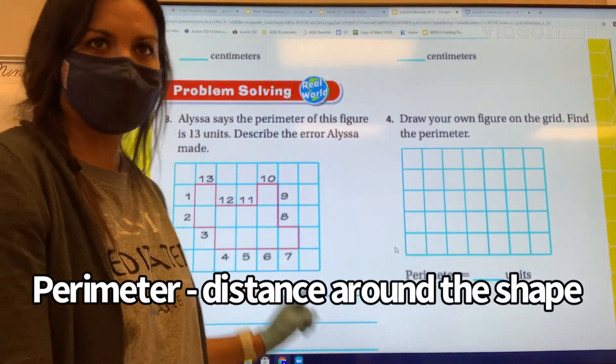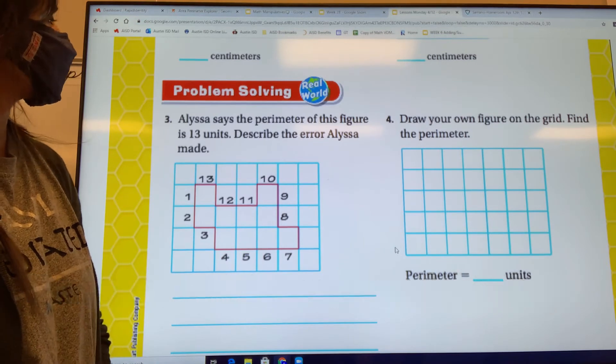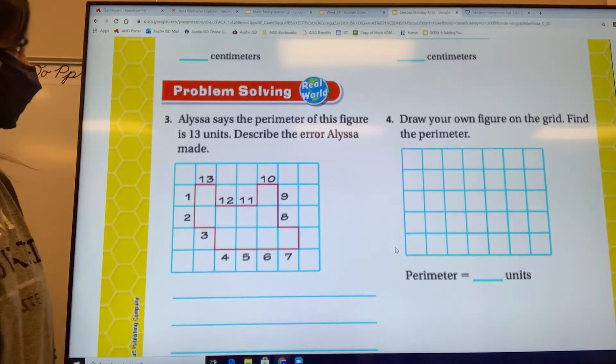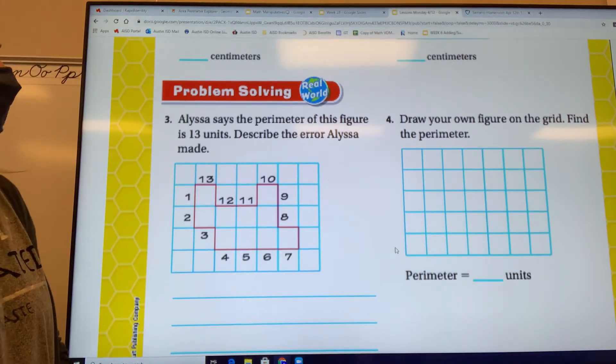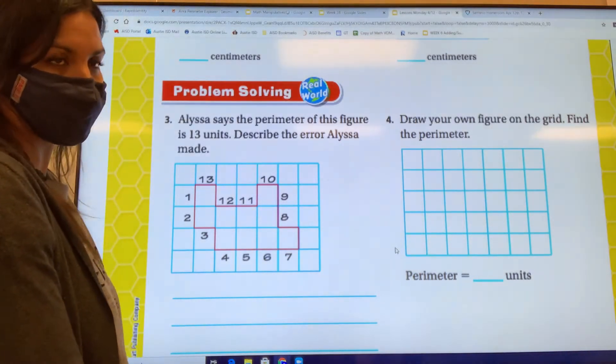Hey guys, let's go ahead and do an example of finding the perimeter. Alyssa says the perimeter of this figure is 13 units. Describe the error Alyssa made.